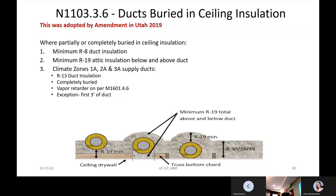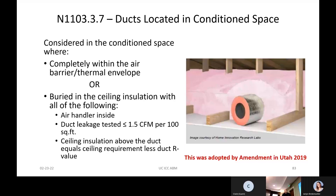We actually adopted by amendment in 2019 that you get some credit in load calculations if you get a minimum R-19 over the top of the duct, but you still need an insulated duct. If you want to call it inside the thermal envelope, you have to test it really, really tight. That's an energy code thing — it's being addressed in the new codes. Whatever the case, they need to put the ductwork in the location specified.